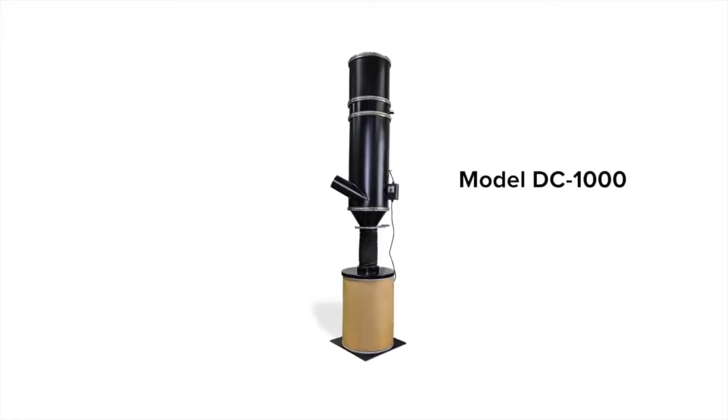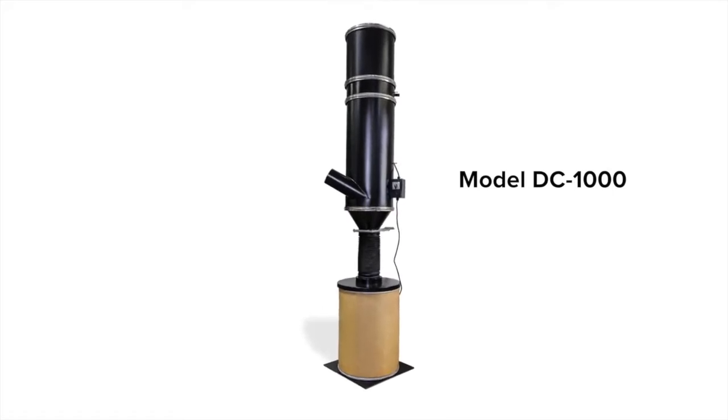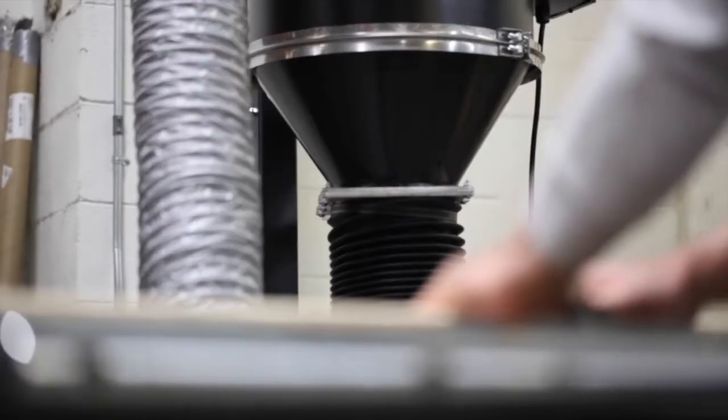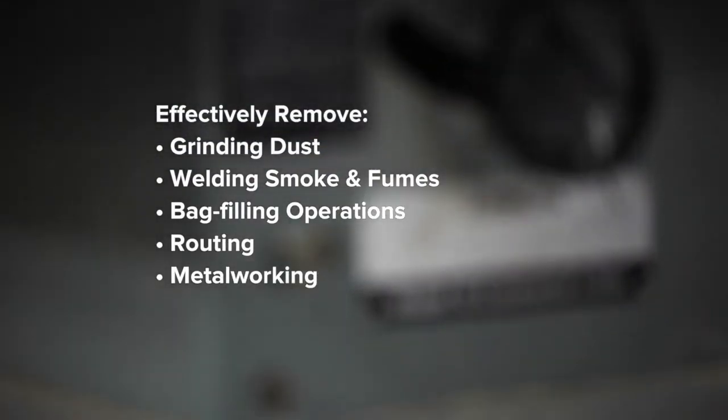The Extract All Model DC-1000 air cleaning and dust collection system is a powerful yet compact system. The DC-1000 is designed for the effective removal of smoke, dust, fumes, and other airborne contaminants from a wide variety of industrial and other applications.